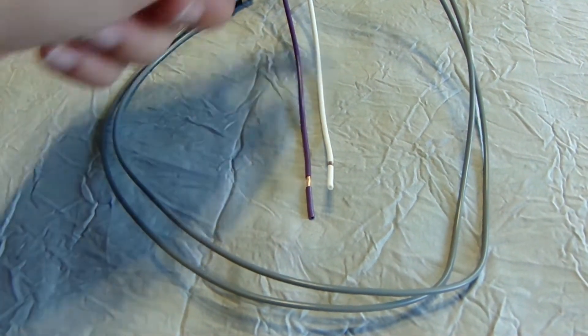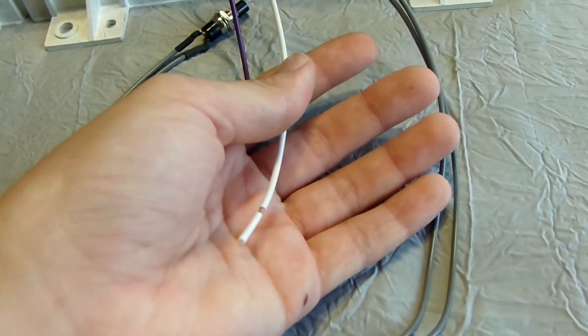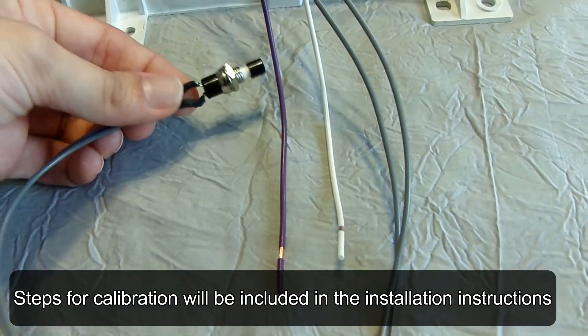The white wire is responsible for the speedometer reading and attaches to the new speedometer cable that we will install later on. The gray wire allows you to easily set the trip odometer and also allows for calibration.